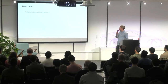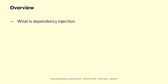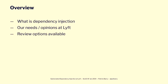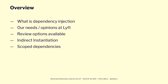So we're going to do a quick overview. First of all, just to get everyone on the same page. I'm sure most of you are familiar with dependency injection, but if some of you are not, we'll quickly run through the basics. We'll talk about our needs and opinionations at Lyft that dictated our solution, run through the available options and their pros and cons, and talk about indirect instantiation and scoped dependencies. Then we'll go into the guided meditation session — and finally, the ecstatic dance.